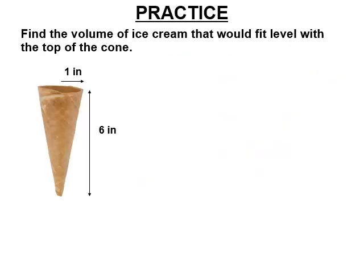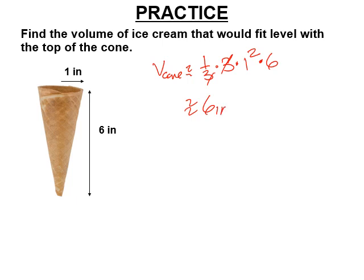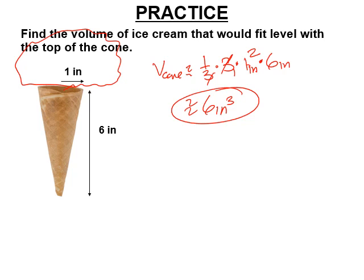For a real ice cream cone, the radius is about 1.2–1.3 inches, but let's use math-friendly numbers. Using 3 for pi: volume of the cone equals one third times 3 times 1 squared times 6 inches height. The 3s cancel, giving approximately 6 cubic inches. There's actually a little more than 6, and remember — most of your ice cream is that blob on top, so you really want that blob to be big.